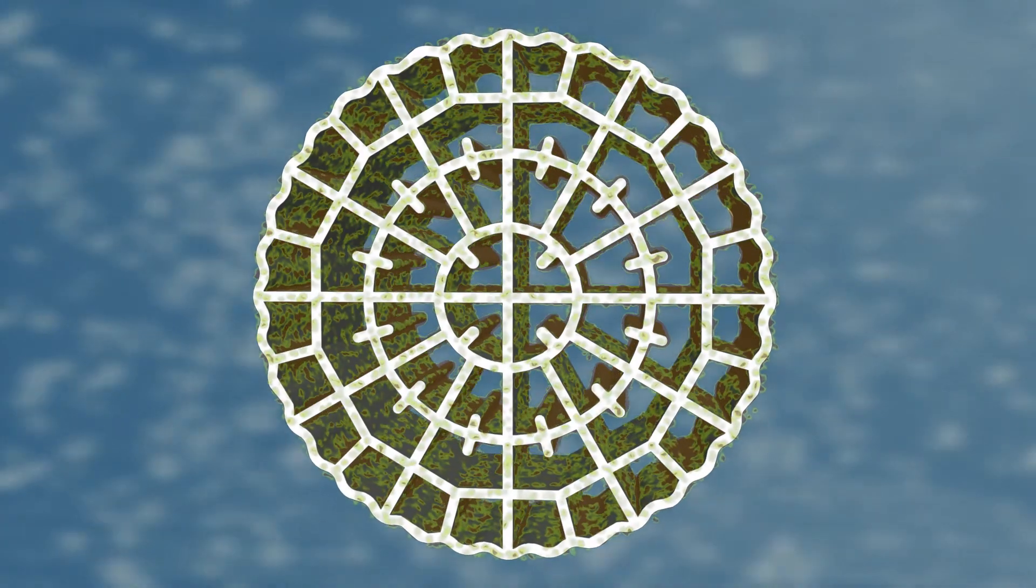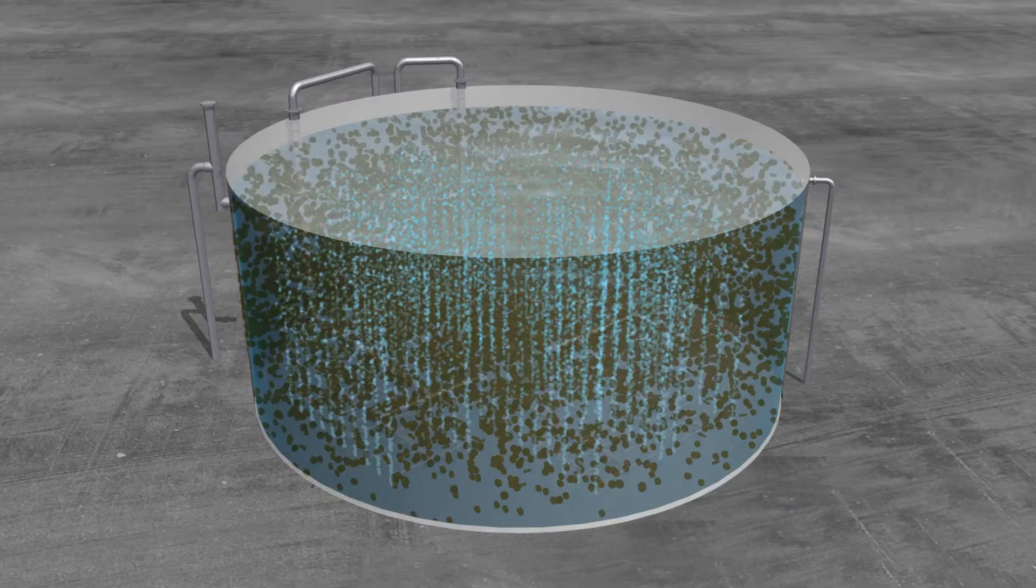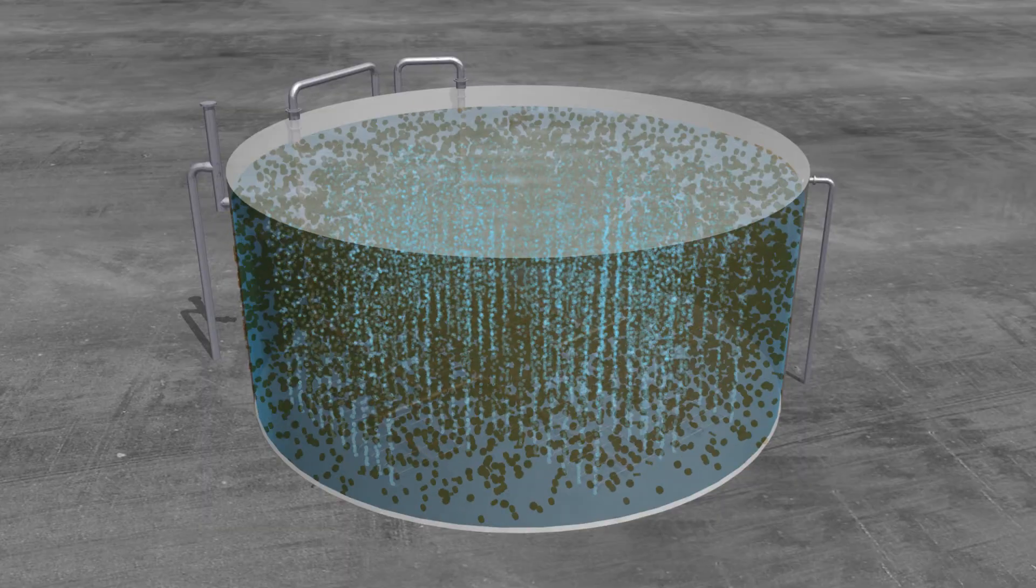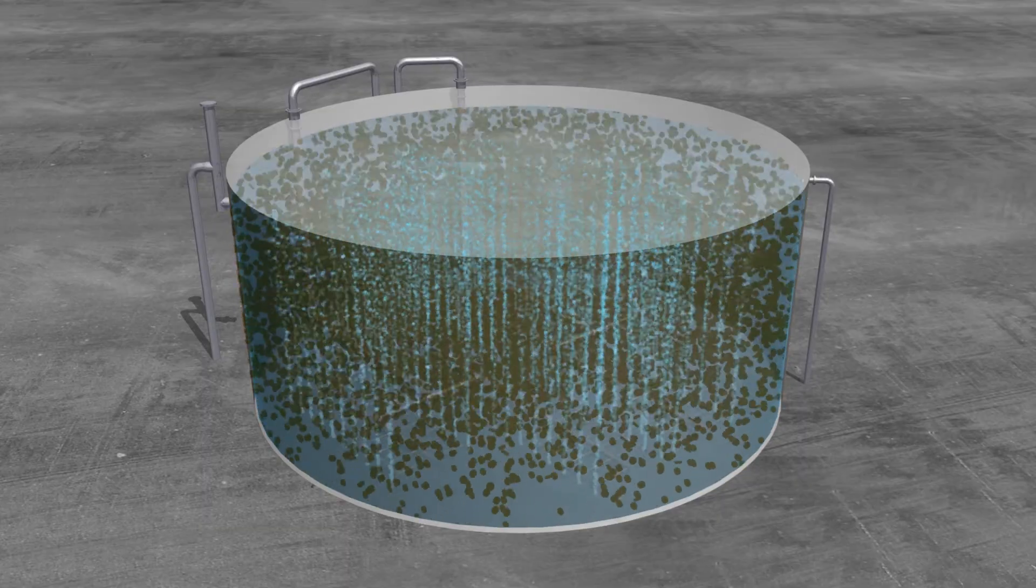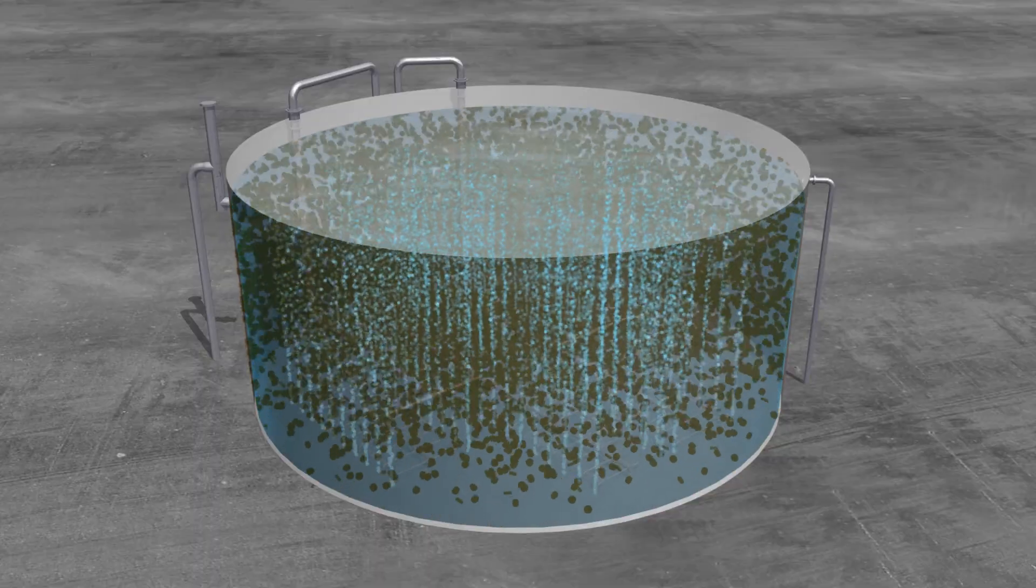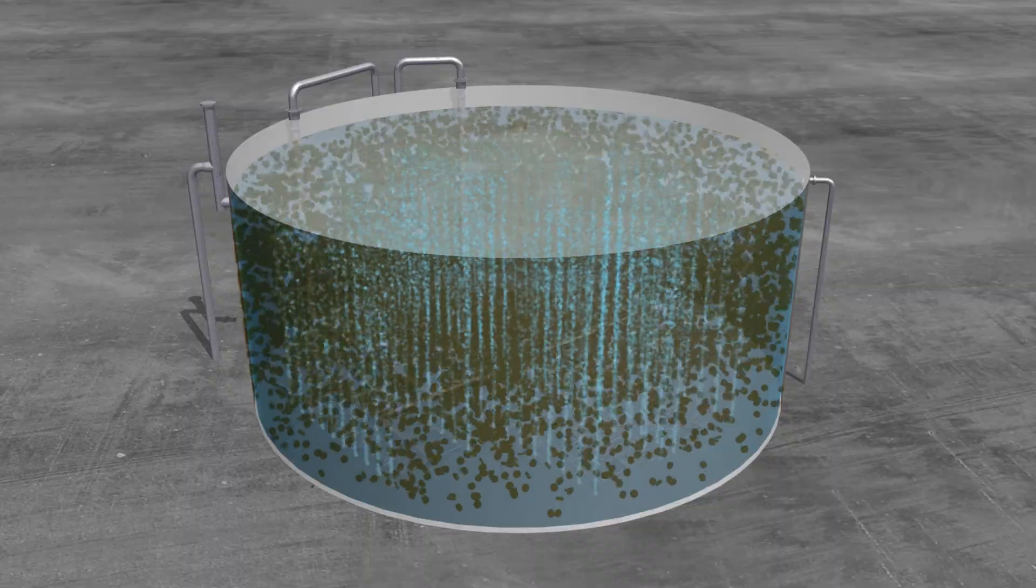Bacteria will grow on the media in multiple layers, allowing the MBBR to be very robust and self-regulating. If an event were to occur, such as a giant pH swing, the media will not lose all of the layers of the bacteria, giving the MBBR the opportunity to recover much quicker than other processes.